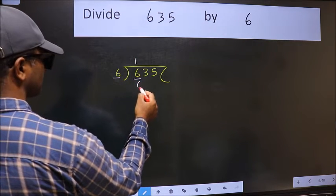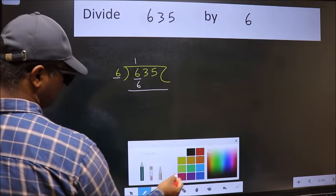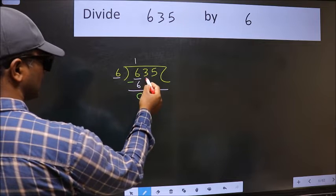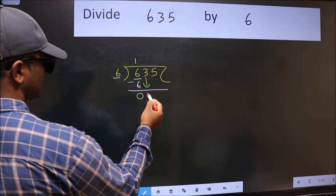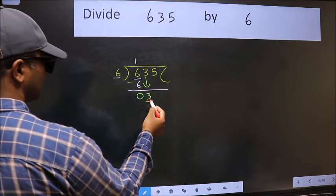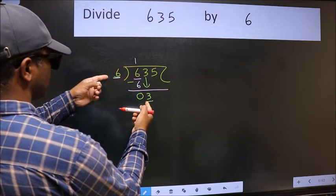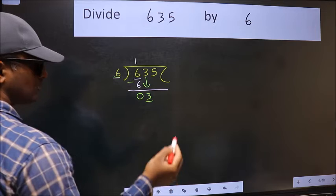Six ones is six. Now we should subtract, we get zero. After this, bring down the next number, so three down. Now here we have three and six here. Three is smaller than six, so we should bring down the second number.